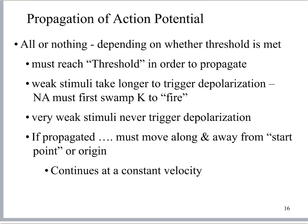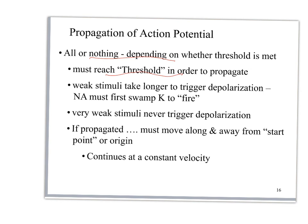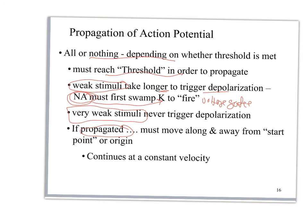The last note here is just a reminder of what an action potential is. This idea of all-or-nothing: you must reach threshold in order to propagate it. If the initial stimulus is weak, you may need to wait longer or it may never trigger depolarization of a voltage gate, because you've got to get enough sodium in there to swamp out the potassium in order to trigger an action potential. If the stimulus is too weak, you may never get an action potential. But if it starts, it's all or nothing — it's going to move away from its point of origin and continue at a constant velocity as it goes along. That's the end of part seven.